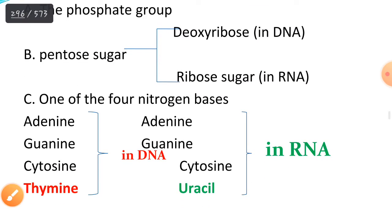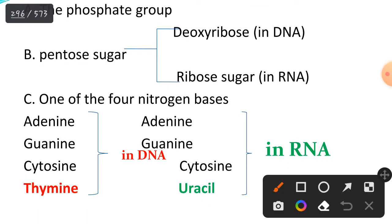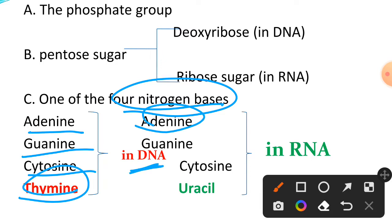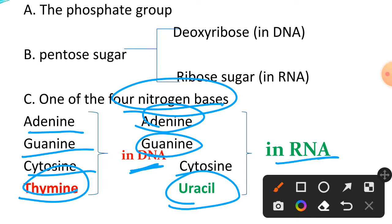Each nucleotide contains one of the four nitrogen bases. For DNA, those are: adenine, guanine, cytosine, and thymine. For RNA, they are: adenine, guanine, cytosine, and uracil. So thymine is found in DNA, and uracil is found in RNA — don't forget this.